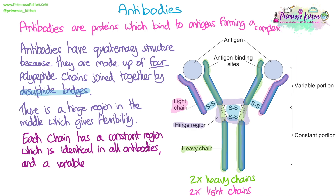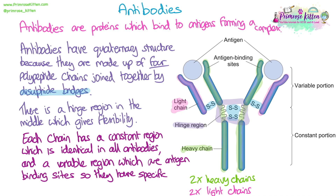Each chain has a constant region which is identical in all antibodies, and then a variable region which is up near the antigen binding site. The variable region gives the antibody its specific tertiary structure that makes it complementary to one type of antigen.